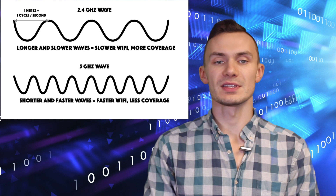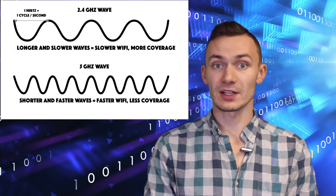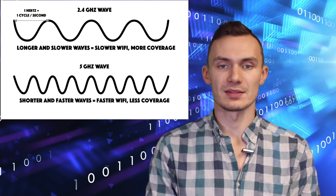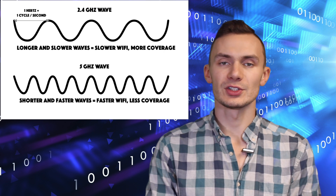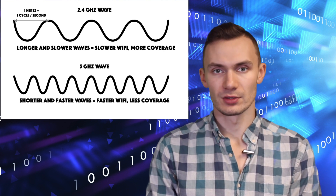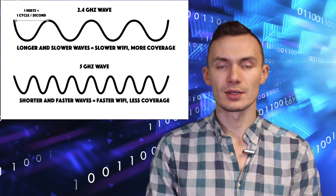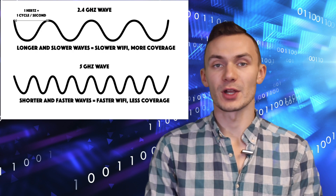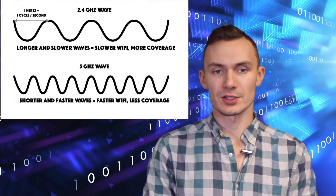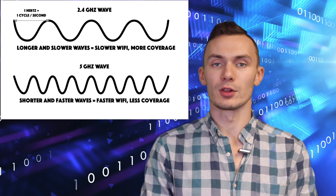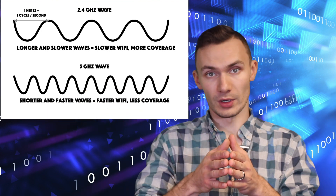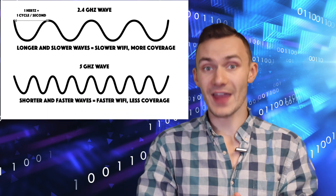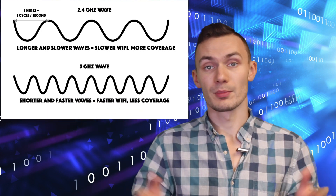Wi-Fi comes in different radio waves, specifically 2.4 gigahertz and 5 gigahertz bands. Hertz is a unit of measurement for a cycle — in this case, waves per second. It describes the size of a wave but also the speed. 2.4 gigahertz waves are longer but slower, while 5 gigahertz waves are faster but shorter.